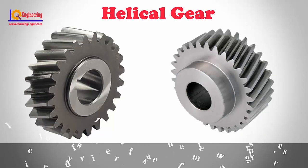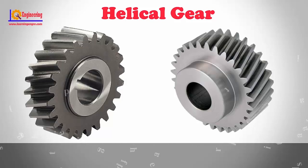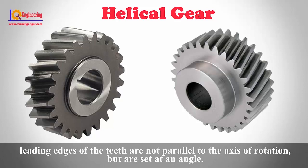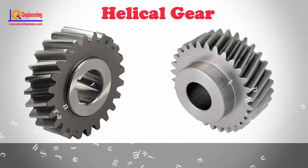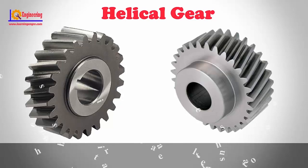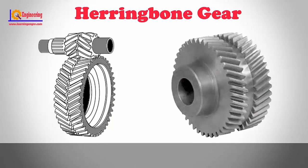Helical gears offer a refinement over spur gears. The leading edges of the teeth are not parallel to the axis of rotation, but are set at angles. Since the gear is curved, this angling makes the teeth shape a segment of a helix. Helical gears can be meshed in parallel or crossed orientations.